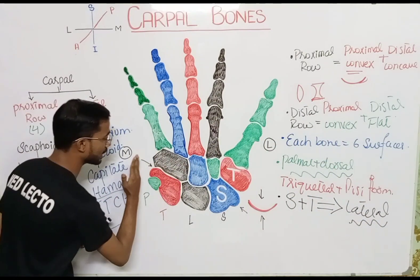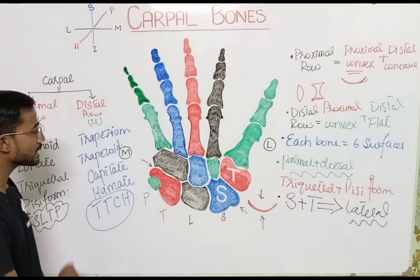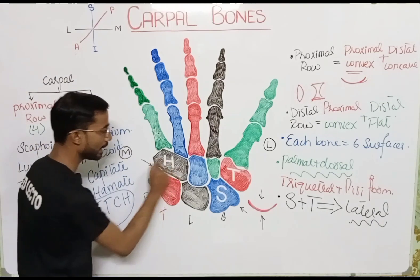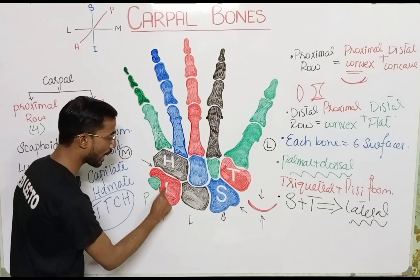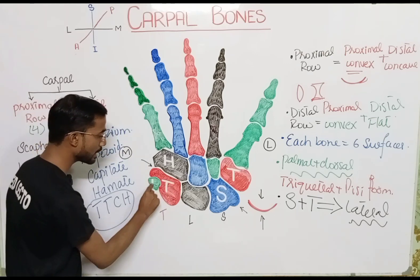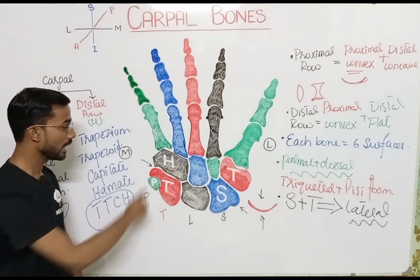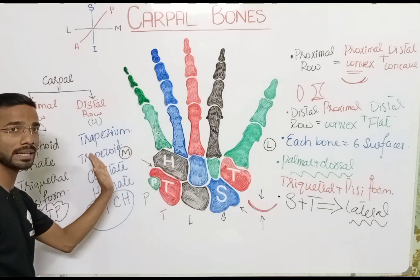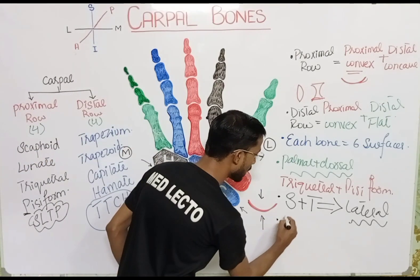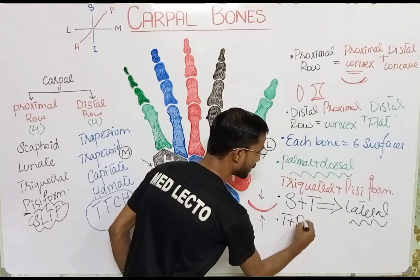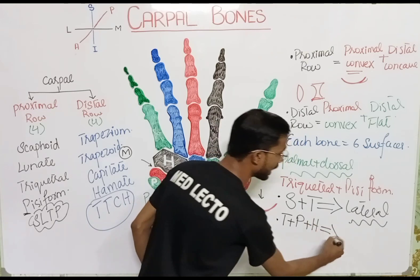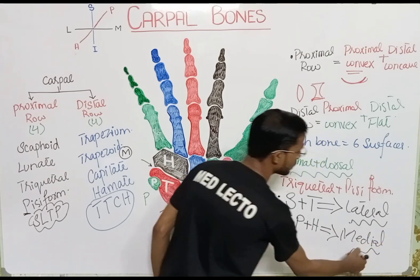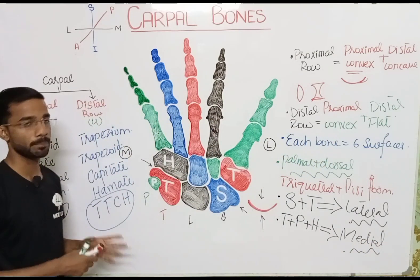At the medial side, you again see three bones: the hamate, the triquetral, and the pisiform. These bones also have no attachment or articular surface at their medial side. This is another important point.